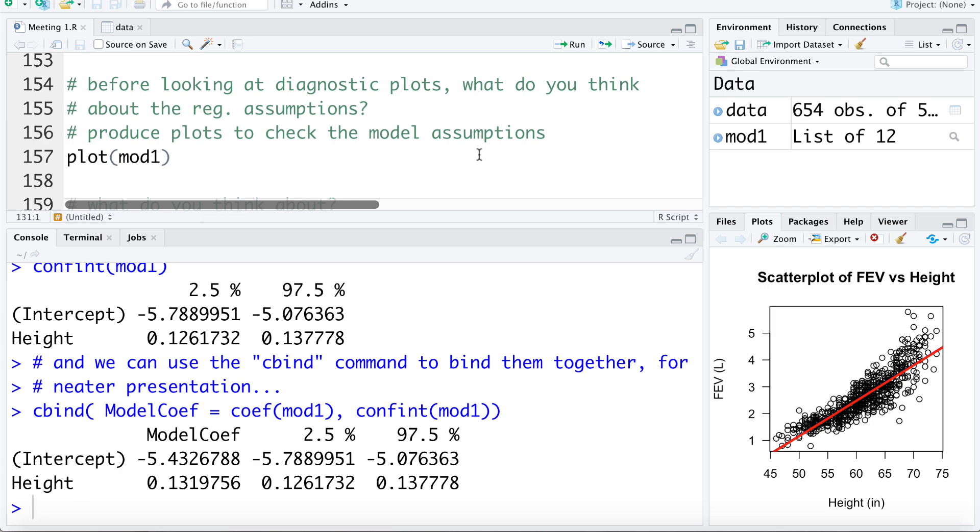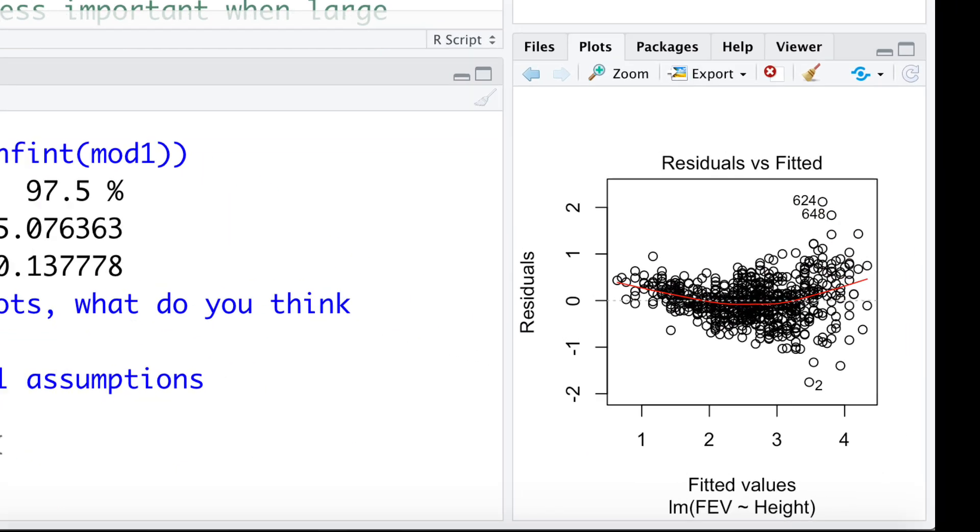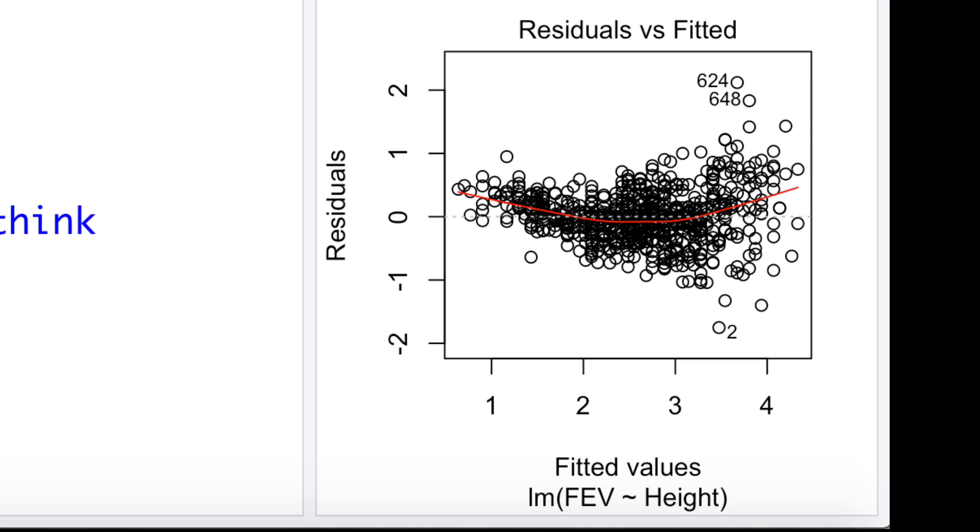We talked about why we need plots: when we get to multiple linear regression with multiple X variables, we can't just look at a simple scatter plot to decide if the assumptions seem to be met or not. We can use the plot command to produce the diagnostic plots, and we can see here looking at the residual plot, we can see this sort of megaphone shape in the residual plot, which suggests there's increasing variability.